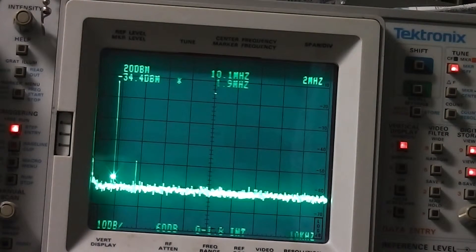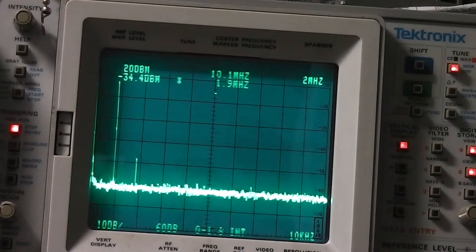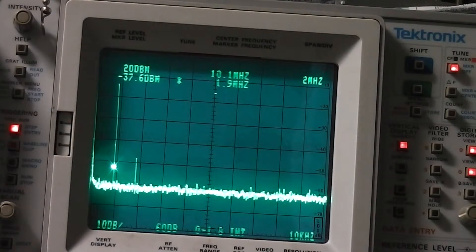This is the output to the aerial. As you can see, we've got a little bit of second harmonic, but that's further filtered by using a resonant aerial. Generally that's acceptable for the power level of this radio.